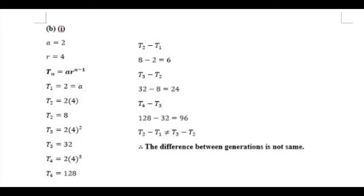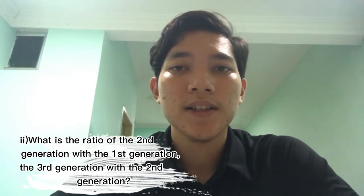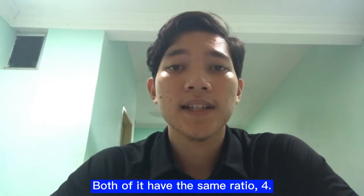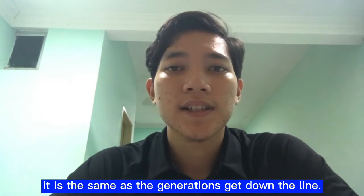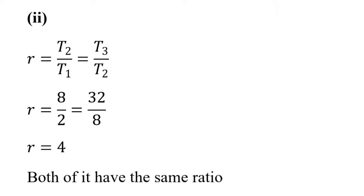When we get the answers for each generation, we find the difference: second generation minus first generation gives 6, third generation minus second generation gives 24, and fourth generation minus third generation gives 96. For Question 1B2, it asks for the ratio of the second generation to the first generation, and the third generation to the second generation. Both have the same ratio of 4. To find the ratio, we use the formula T2 divided by T1. In our case, second generation divided by first generation also equals third generation divided by second generation, and both equal 4.